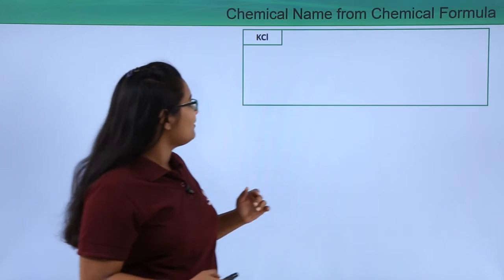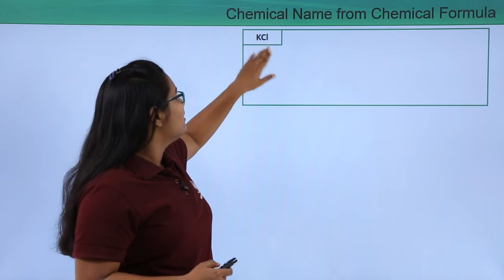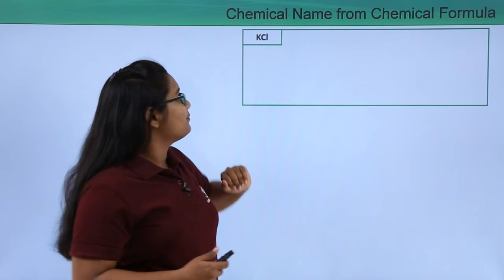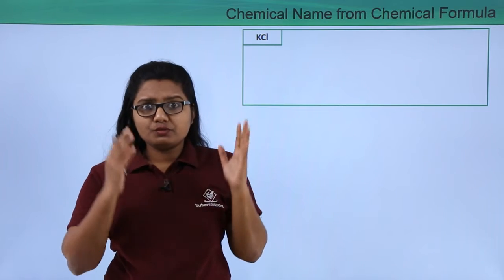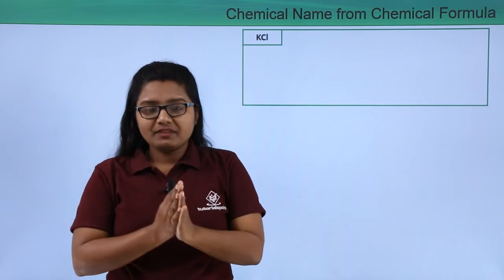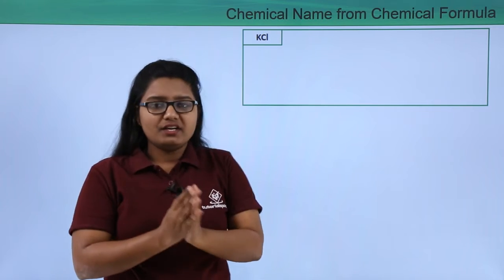Now here I have a formula of a compound which is KCl. The first thing that we need to do just after looking at this formula is that we need to try to figure out what must be the constituents of this particular compound.